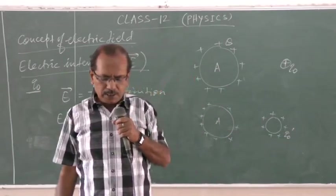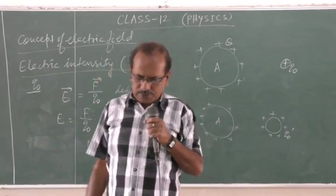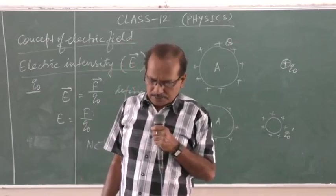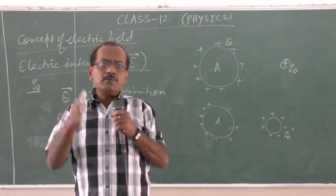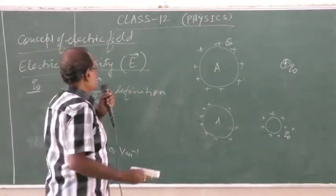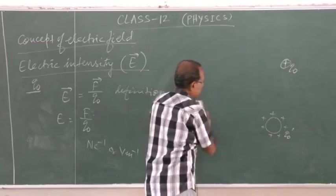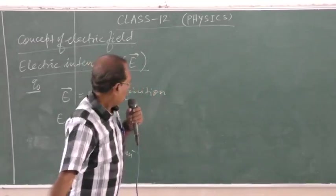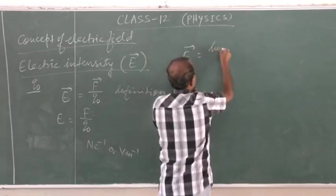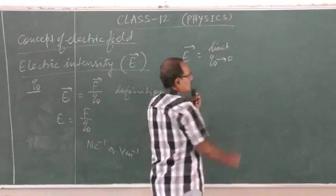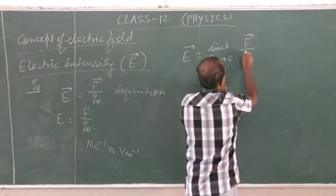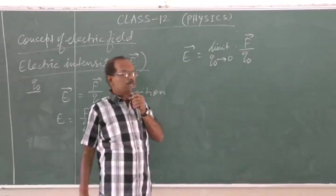The electric intensity at a point is now defined as the force acting on a test charge placed at that point when the test charge approaches zero — that is, a very small value that will not affect the source. Mathematically: E⃗ = lim(Q₀→0) F / Q₀, where F is the force on the test charge due to the source charge.